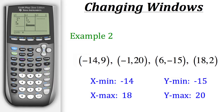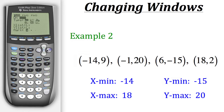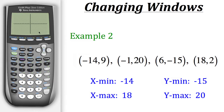To graph the points, we need to turn on the stat plot. Hit 2nd Y= to go to the stat plot, then press Enter on the first one. It's currently off — hit Enter on 'On' to turn it on. The type is set to plot points, which is what we want, with L1 as x values and L2 as y values. Now hit Graph.